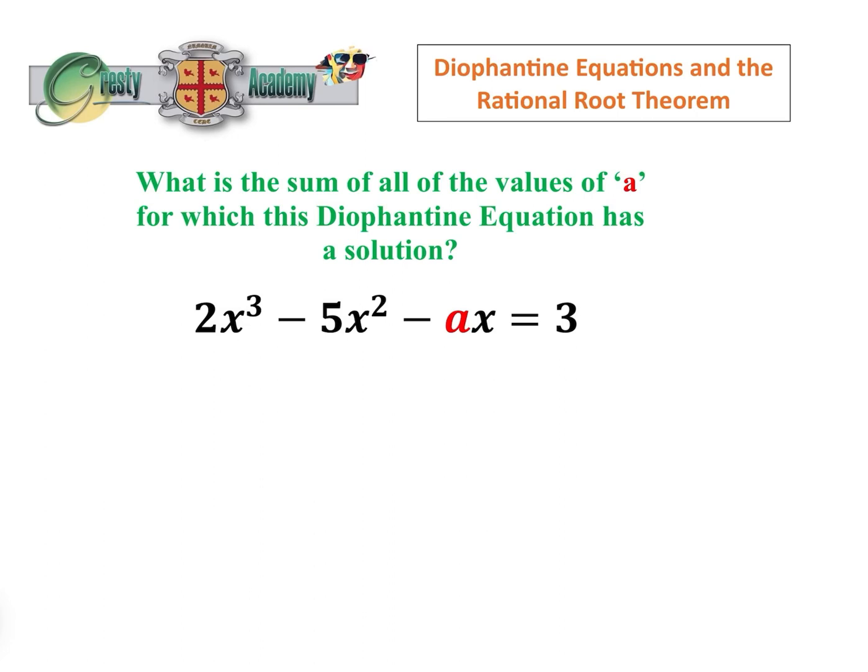What is the sum of all of the values of A for which the Diophantine equation, we're told it's a Diophantine equation, has a solution? Okay, so here's the Diophantine equation and what they're saying is whether it has a solution, what they mean is does it have an integer solution?